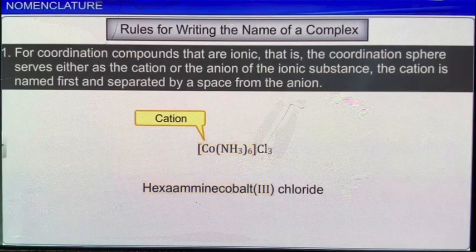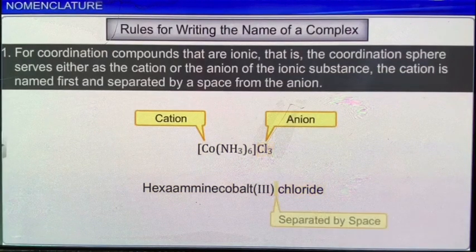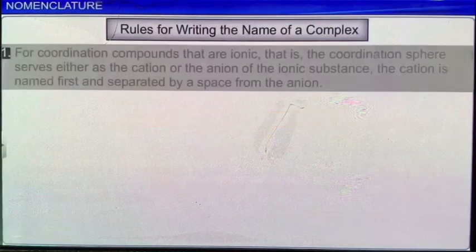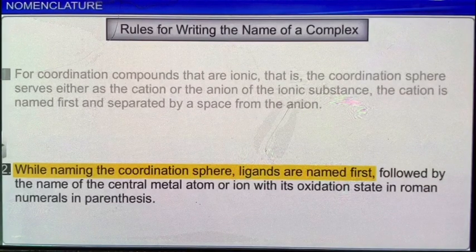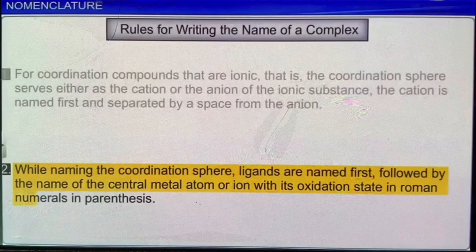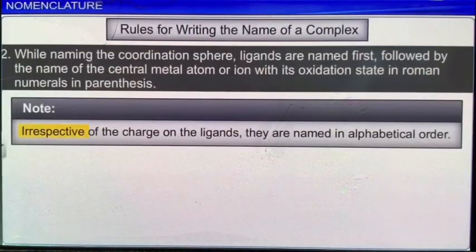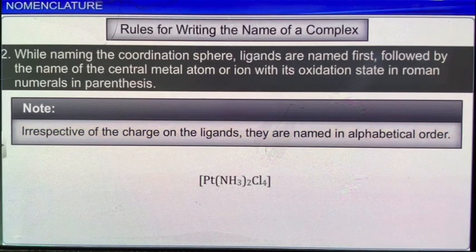The second rule is that while naming the coordination sphere, ligands are named first, followed by the name of the central metal atom or ion with its oxidation state in Roman numerals in parentheses. For example, in the complex [Pt(NH₃)₂Cl₄], the ammonia ligands are named before the chloride ligands according to alphabetical order, followed by the name of the metal ion with its oxidation number enclosed in brackets.